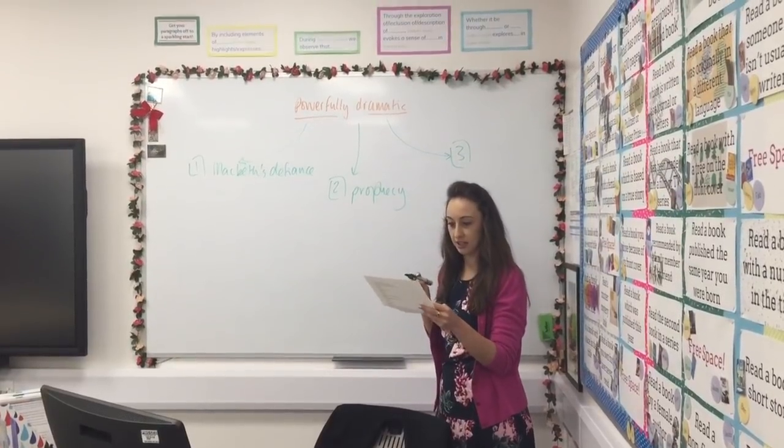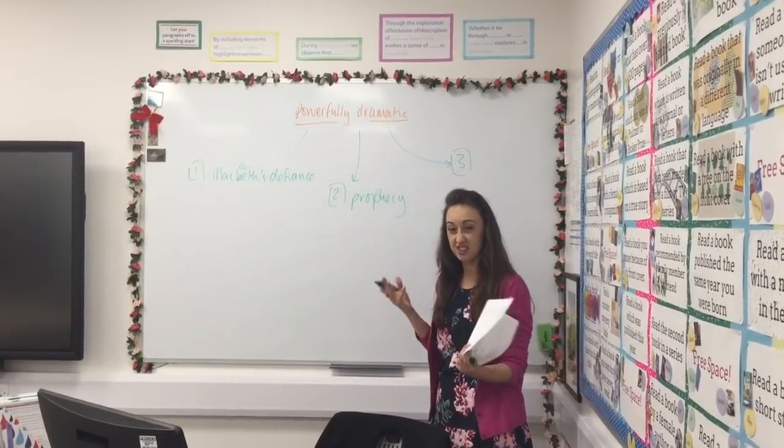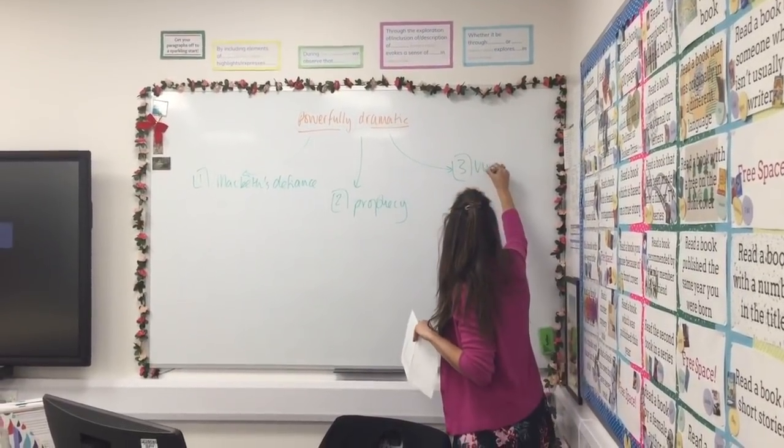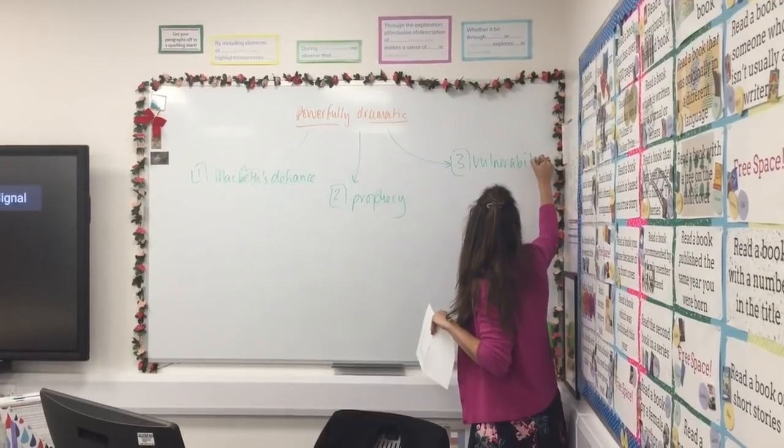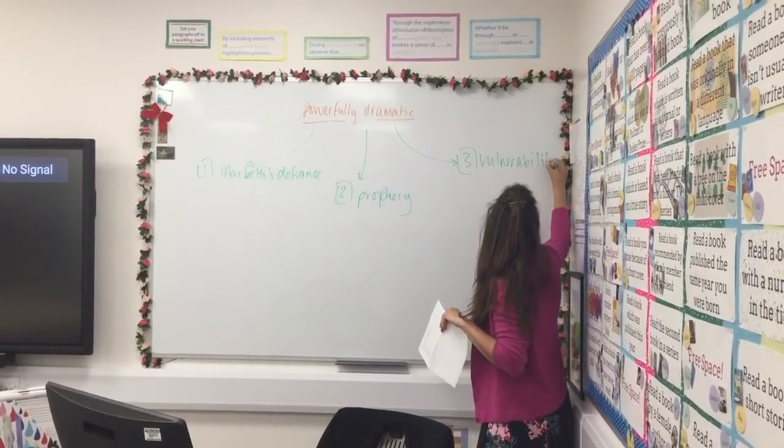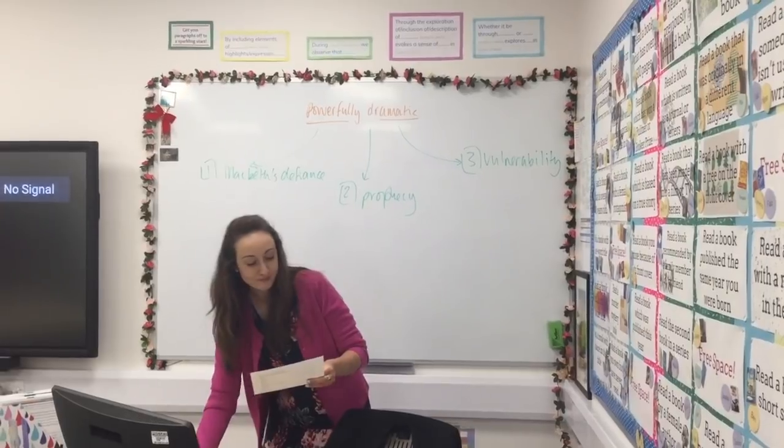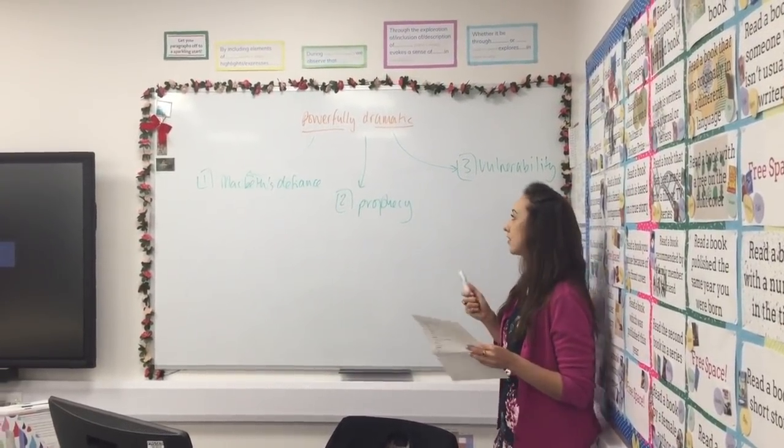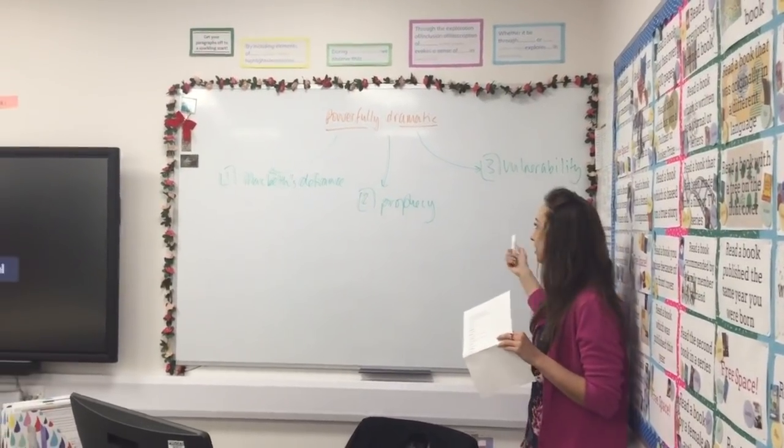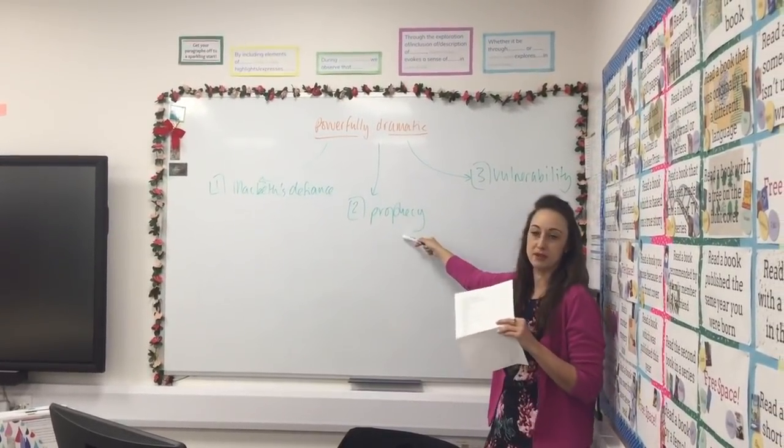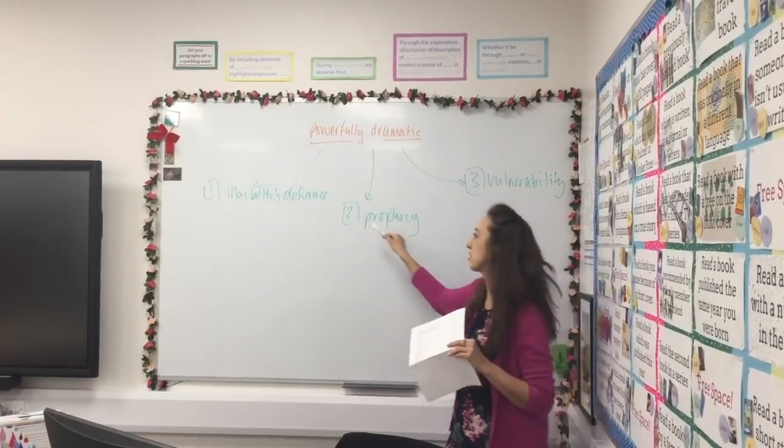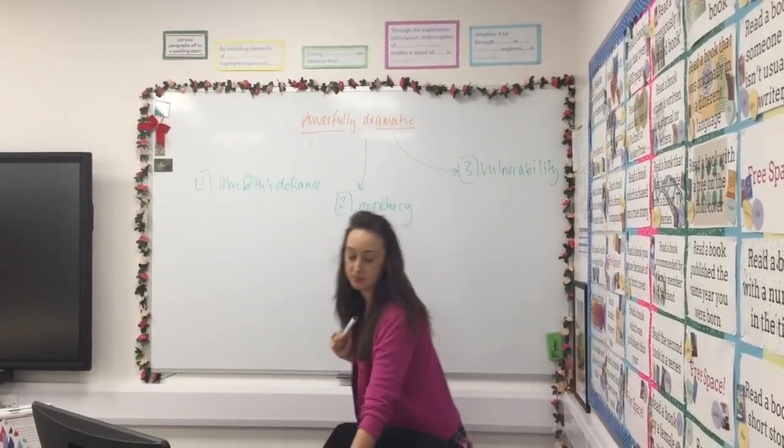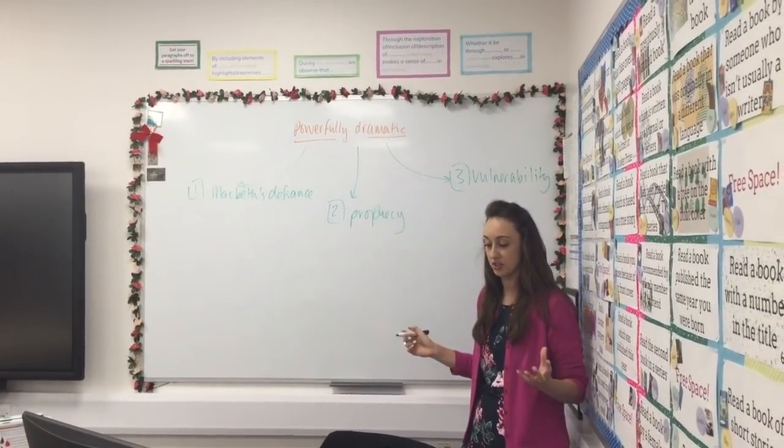Actually I'm going to have one I think on his vulnerability because underneath all of this Macbeth does reveal a little bit about why he's quite concerned even though he won't show it. Okay, and it's often a really good idea in the exam to try and make sure that your paragraphs are really different things so rather than having Macbeth's defiance and then Macbeth's aggression or his confidence those are quite similar so I've made sure that my three paragraphs are very different things. So that's what my three paragraphs are going to be about and now what I need to do is find quotations from the text that I can use to support those ideas.